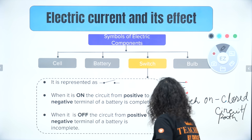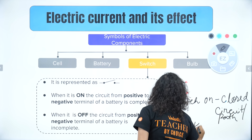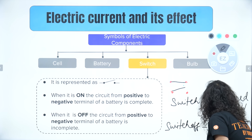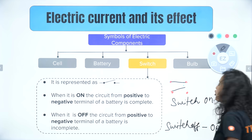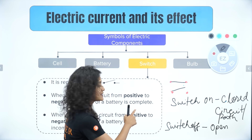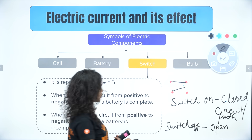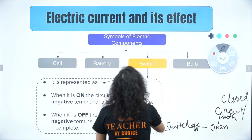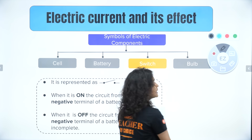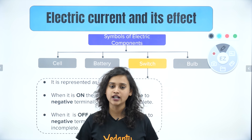If the switch is off, the circuit is open — meaning it is not fully connected. Switch on means closed circuit, and current flows. Switch off means open circuit, and current does not flow. If you have any doubts, please come and join our Telegram group or let me know in the comment section.